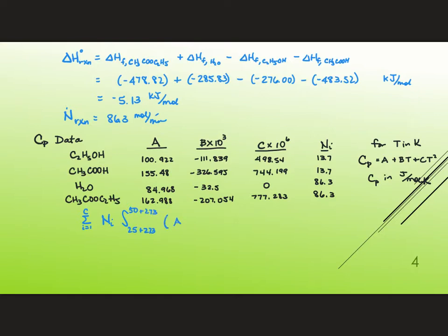a plus bt plus ct squared dt. Now that's going to be in joules per mole kelvin. n sub i will be in moles per minute.